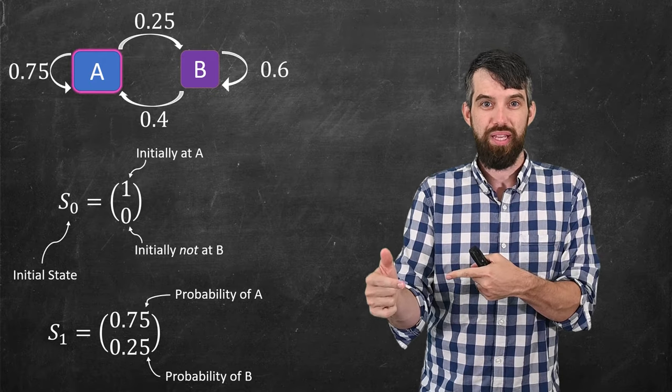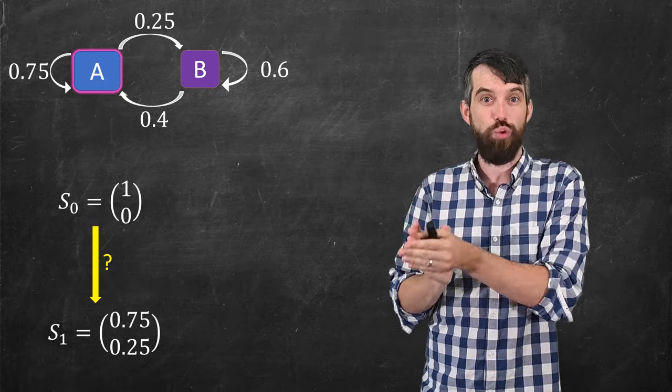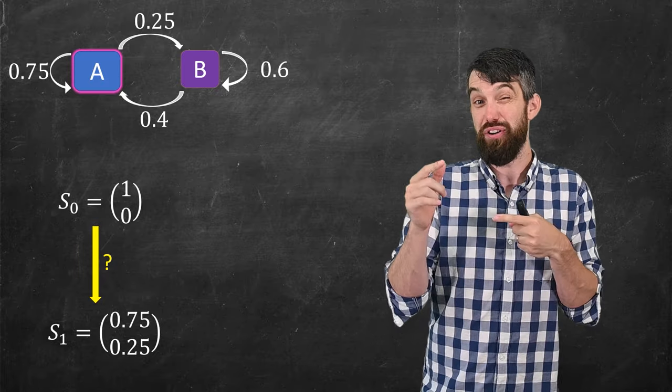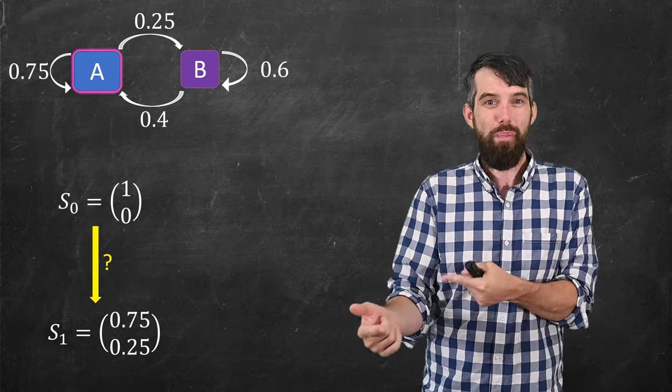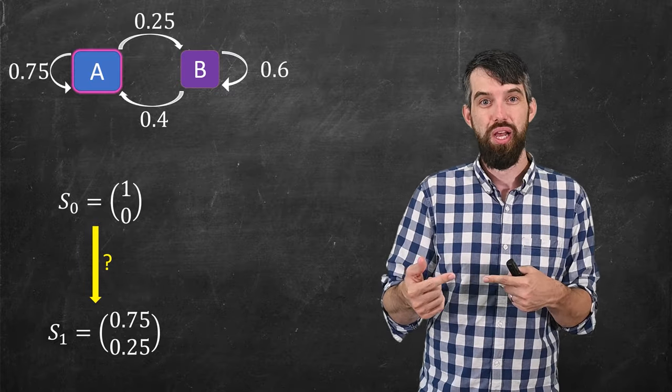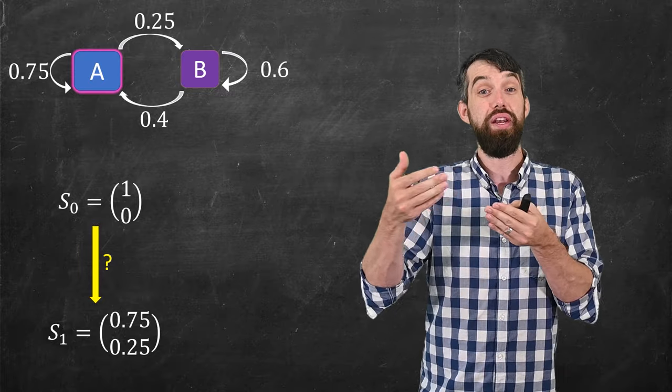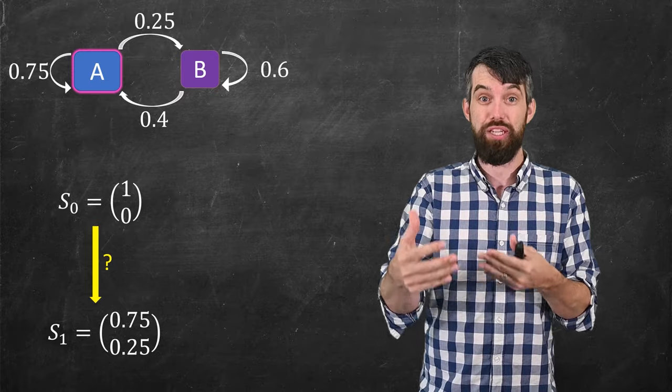So then the question becomes, how can I manipulate to go from the S0 to the S1? I mean, in this case, we were able to sort of figure out what the S1 was just by looking at the diagram, but I can then follow up on this. Well, how do I go from S1 to S2, the state after two iterations, or S2 to S100? Is there a process that allows me to do those types of manipulations efficiently?